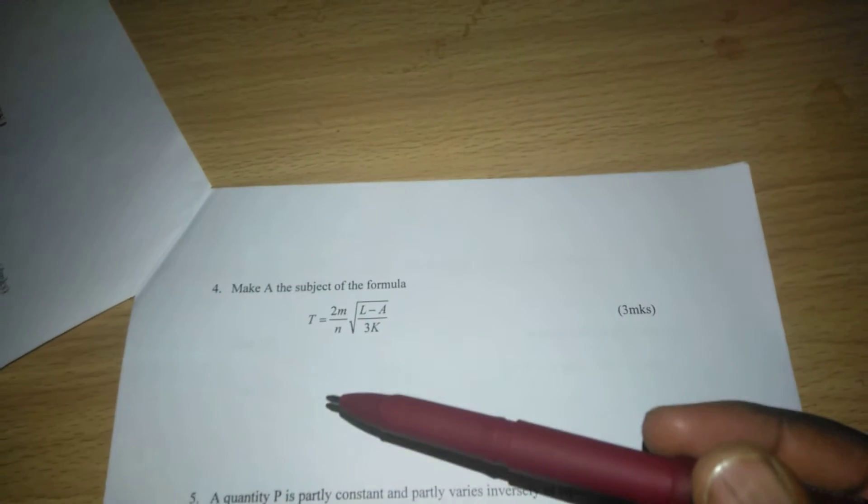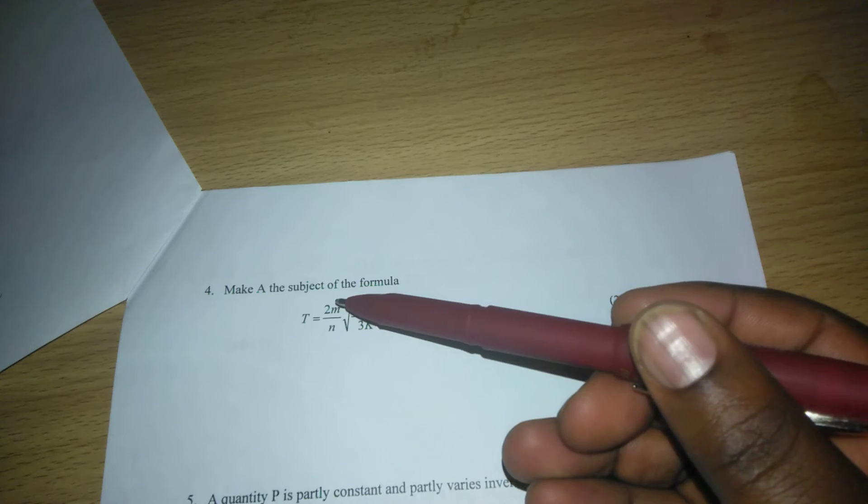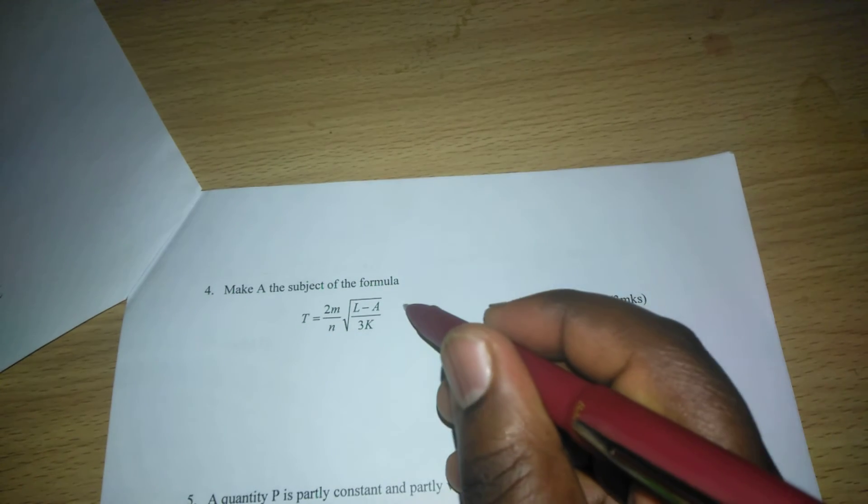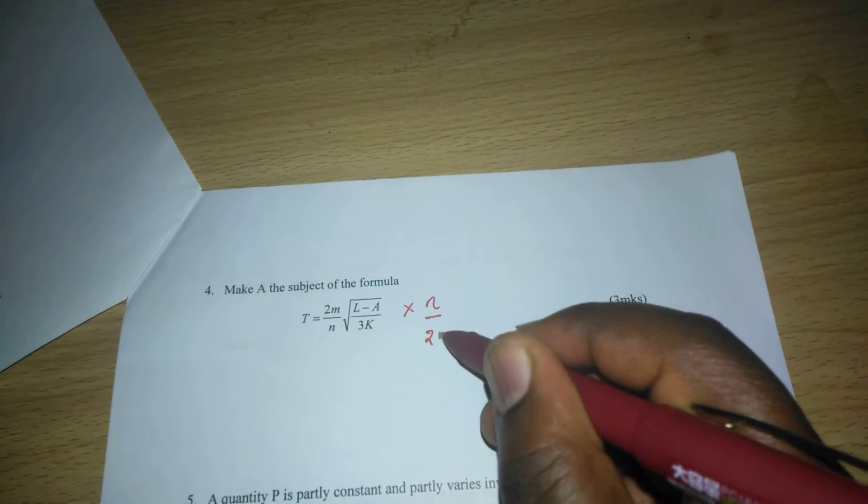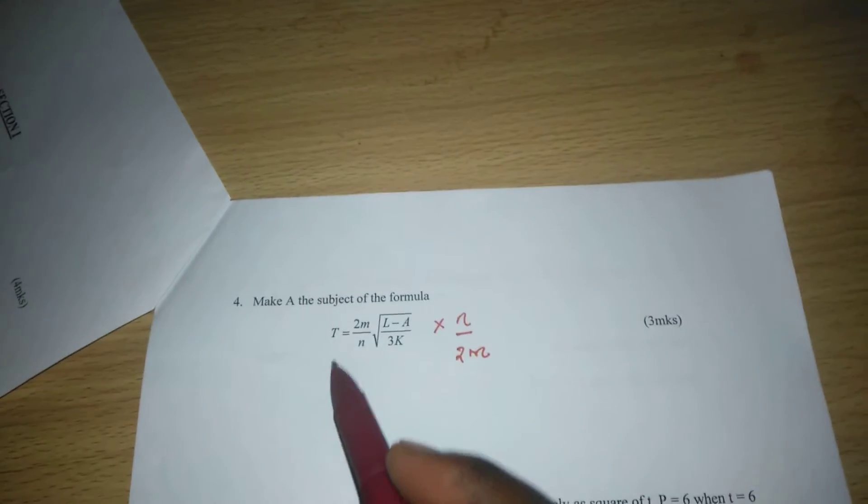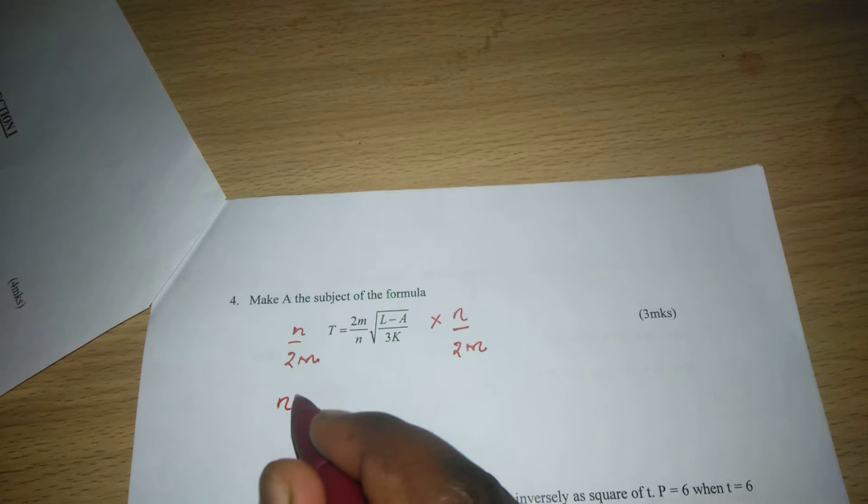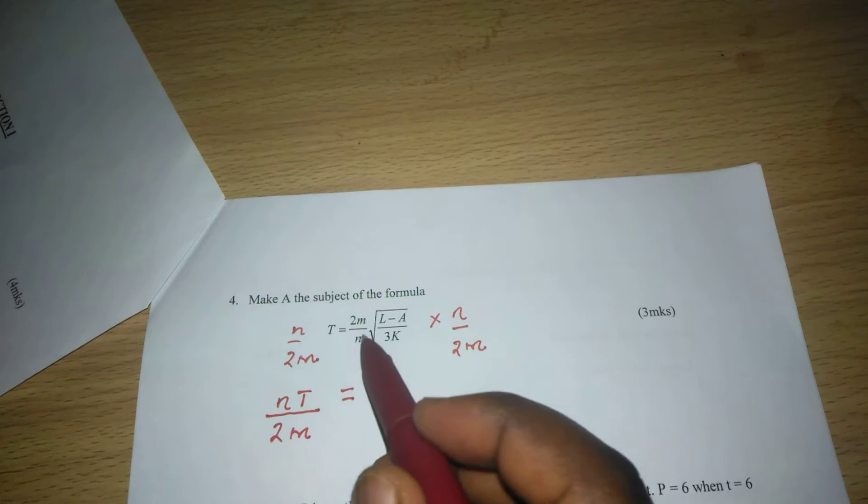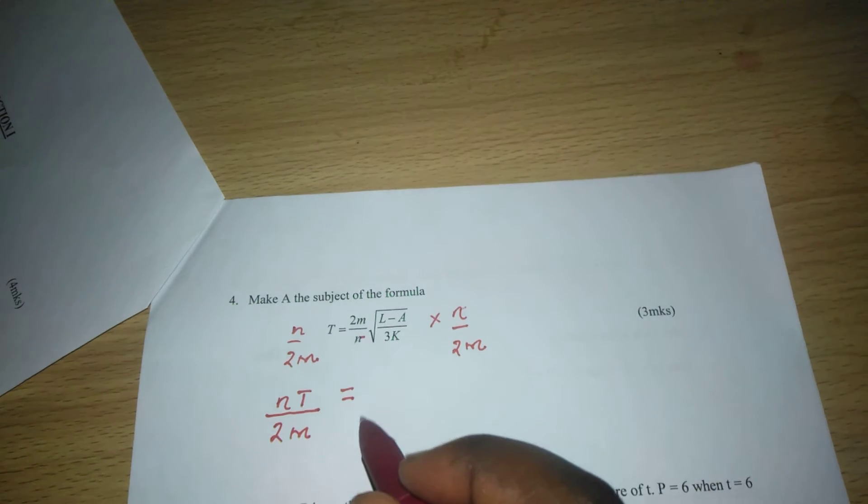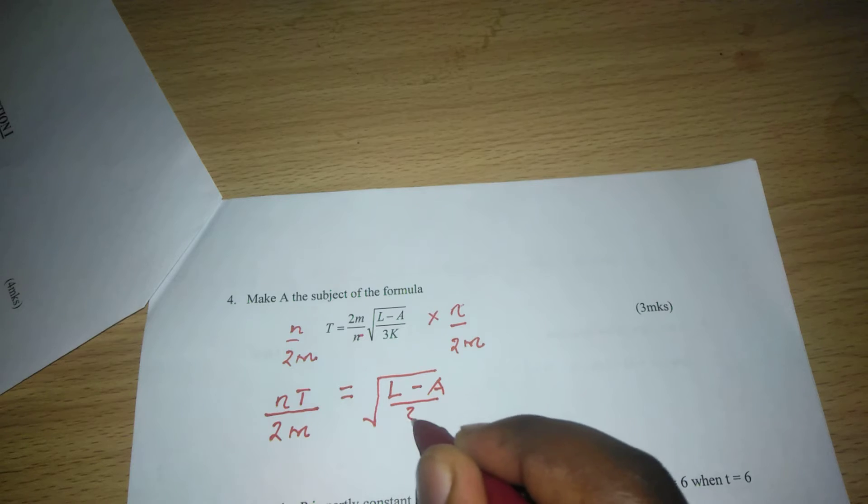We can start by multiplying with n out of 2m so that we eliminate it from this side. So we multiply with n out of 2m on both sides. This leaves us with nt divided by 2m on one side, which equals to the square root of L minus A divided by 3K.